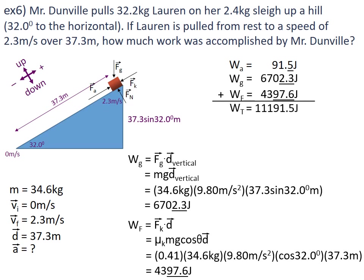I line them all up nice and neat so I can correct for significant figures. As I move left to right, it's work_friction that runs out of significant figures first — it runs out after the three. So I will draw a round-off line between the tens and hundreds spot, and I wind up with a final answer of 11,200 joules.